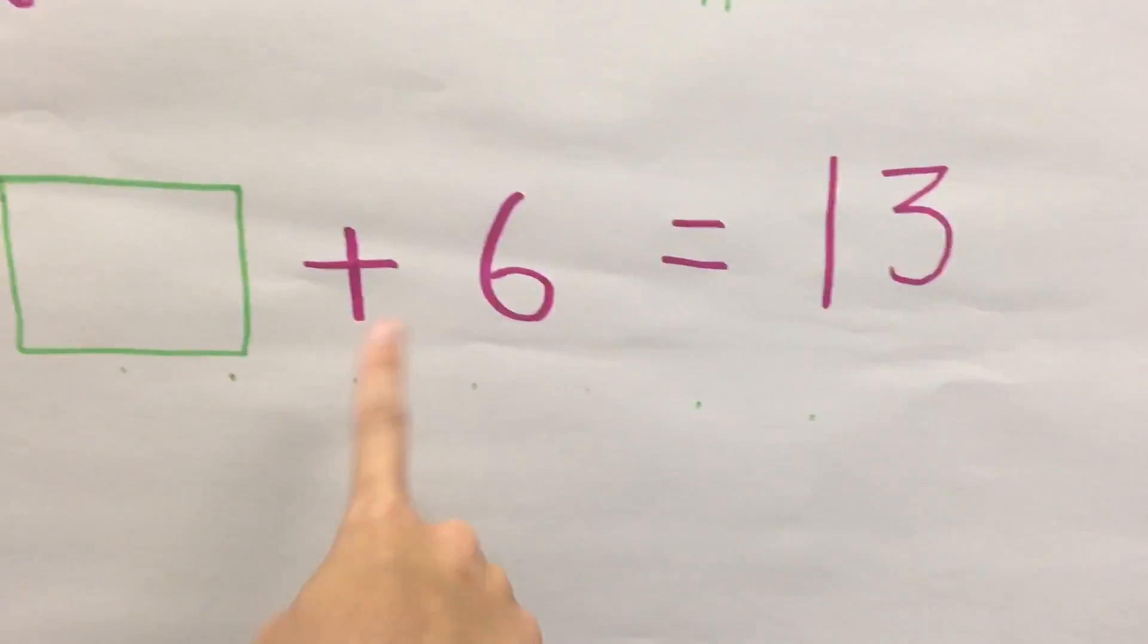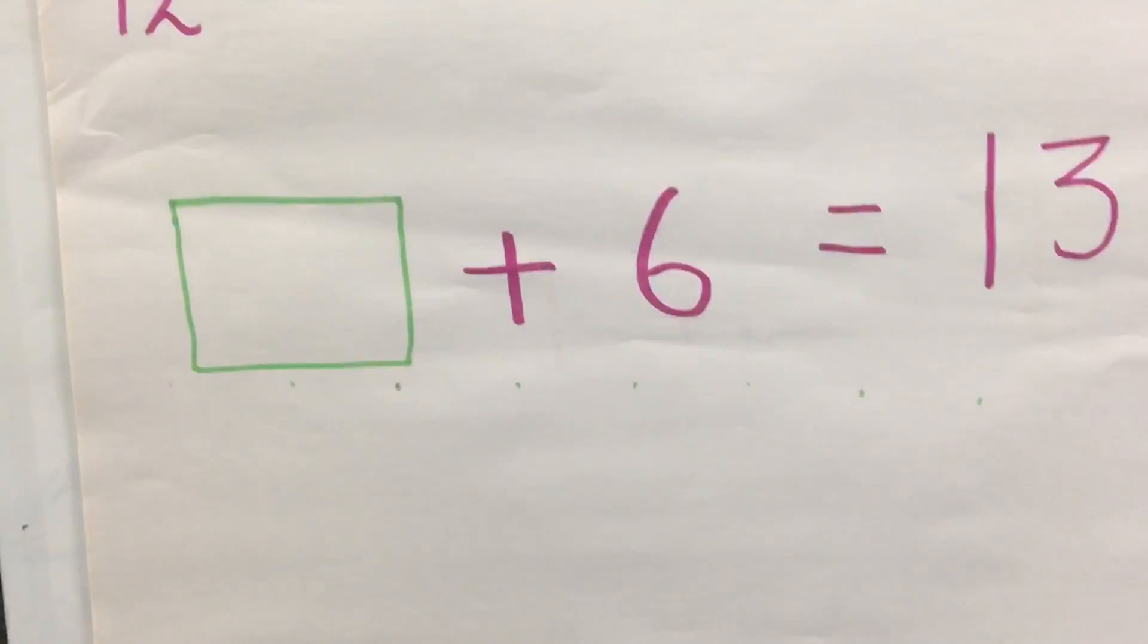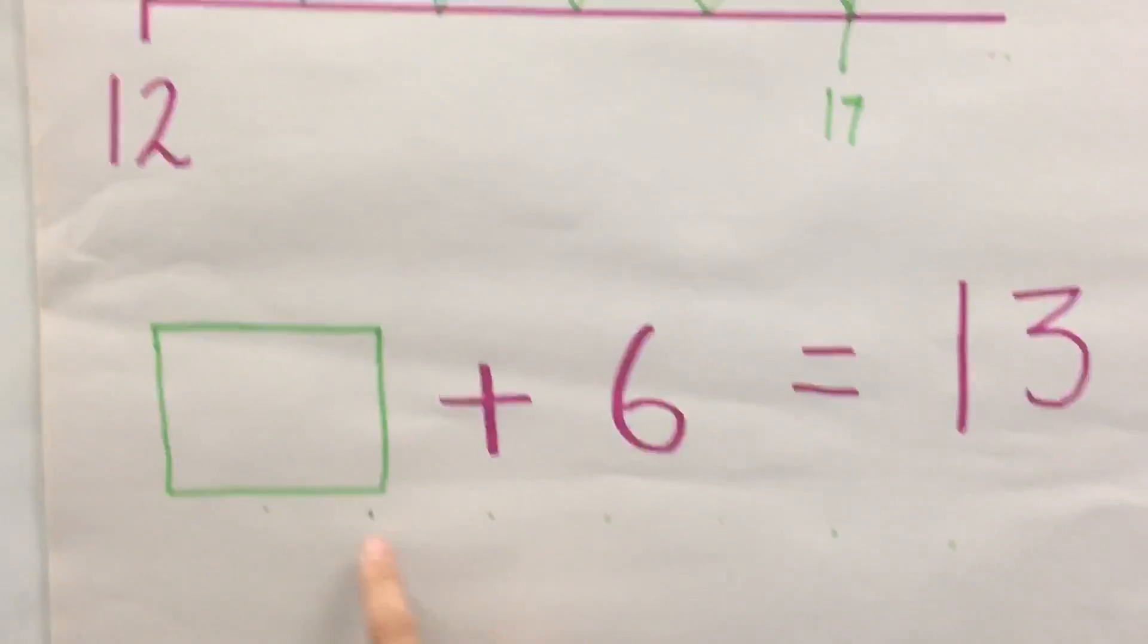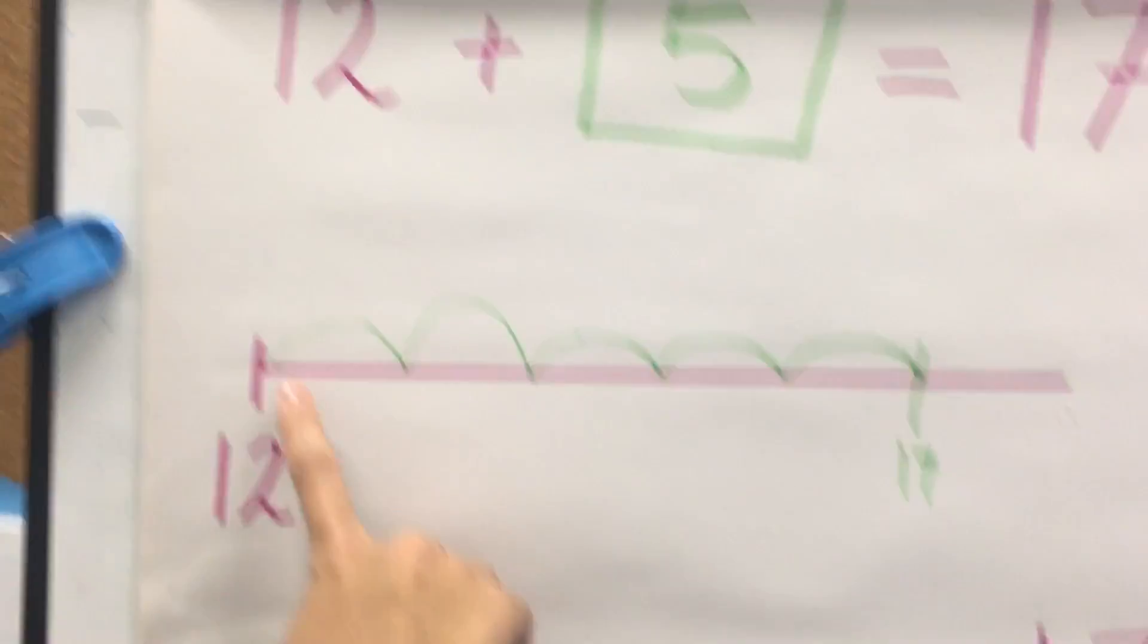So, there's a missing number first and you add 6 and you get up to 13. Children get confused because they don't have a number to start on a number line like this problem.